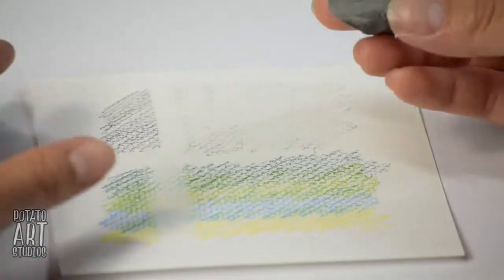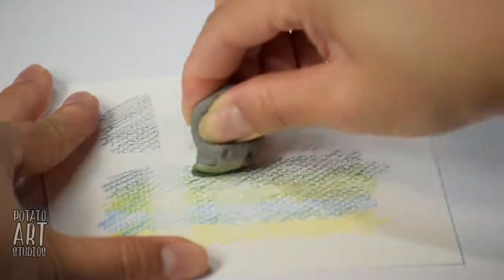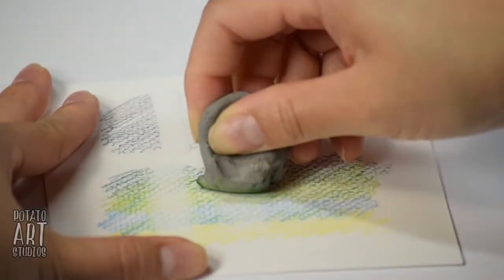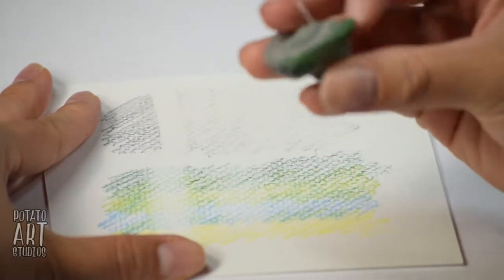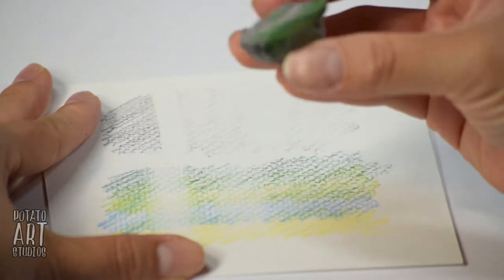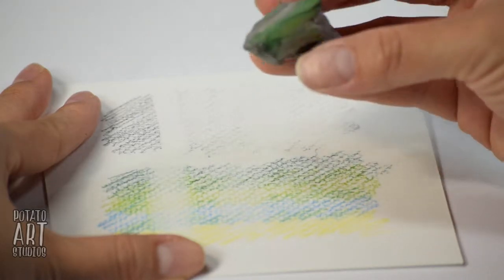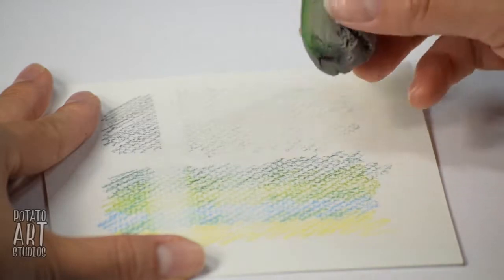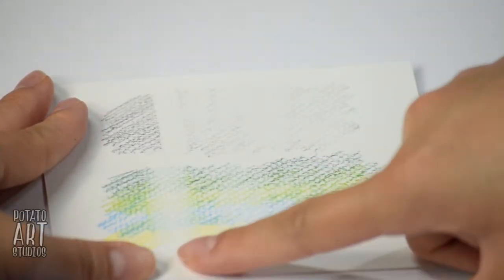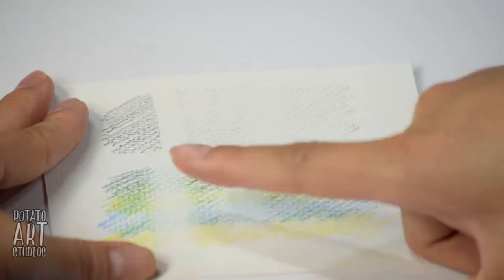But if I go in with the kneaded eraser, it's a lot different. You can see that my kneaded eraser is actually bending and folding over itself because it's so soft, but it is picking up some color over here, as you can tell, but it doesn't erase nearly as cleanly as your regular plastic eraser.